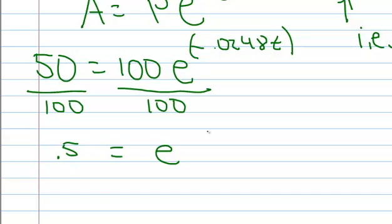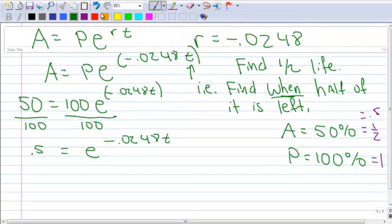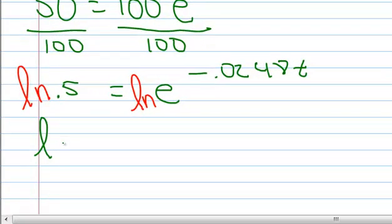It goes E to the negative 0.0248T. So now I'm solving for T, which is in the exponent. So I have to take the log of both sides. I choose to use the natural log. And because the ln of E is 1